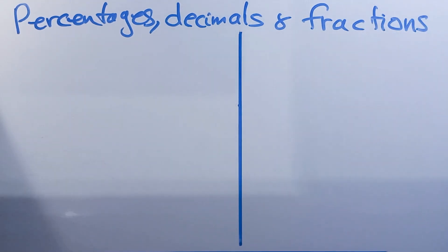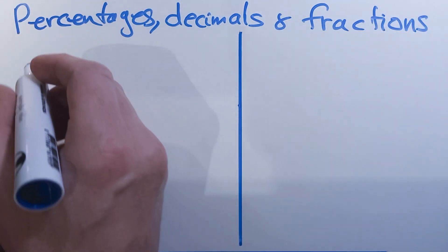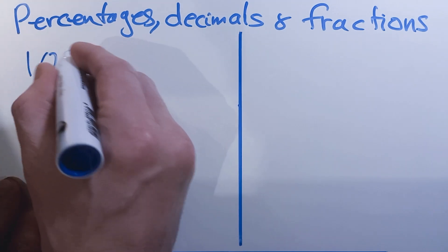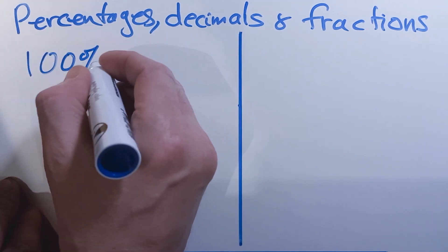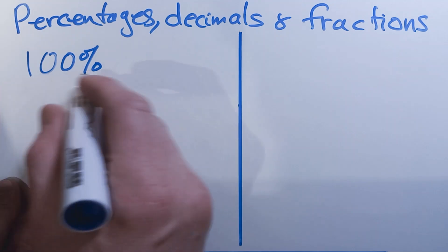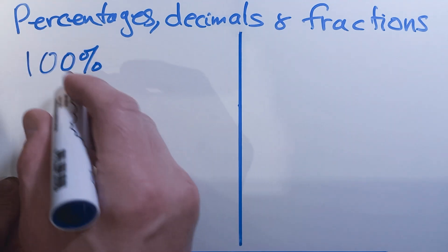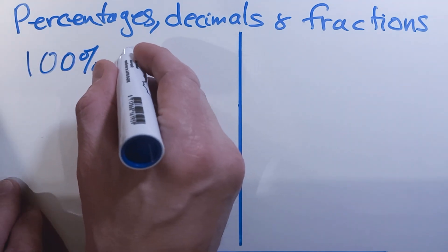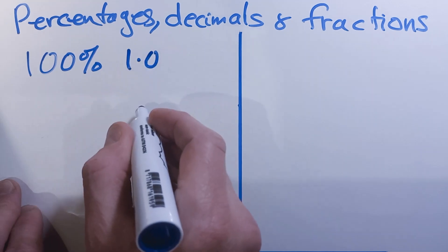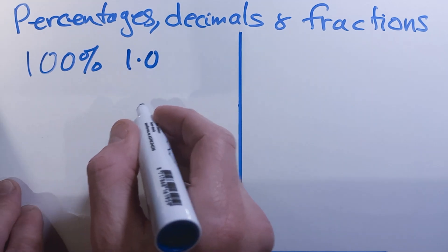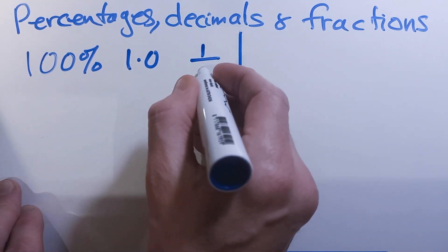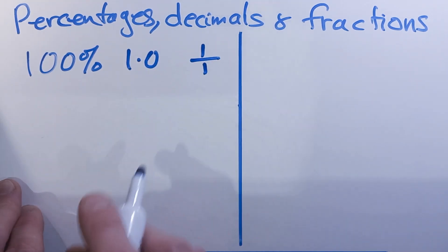So what do I mean by that? Well, if we start off with 100%, hopefully we'll all know that 100% as a decimal you can think of as 1, or 1.0. And as a fraction, that would be 1 out of 1.